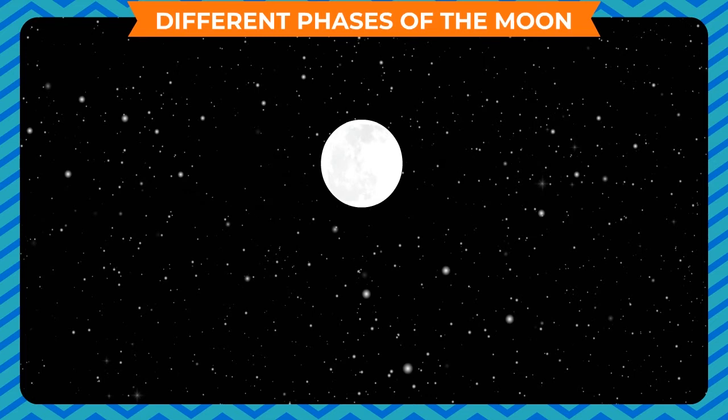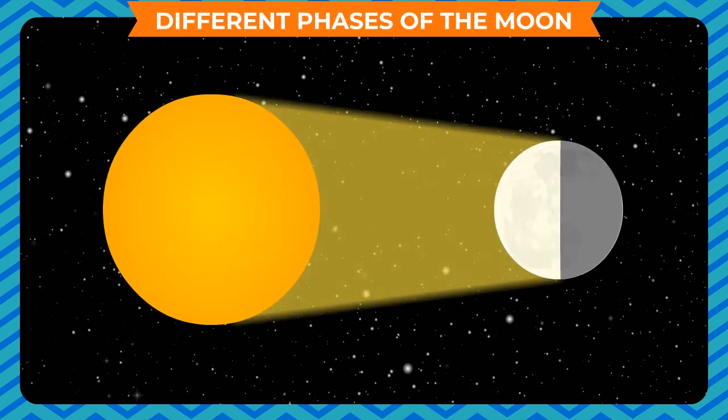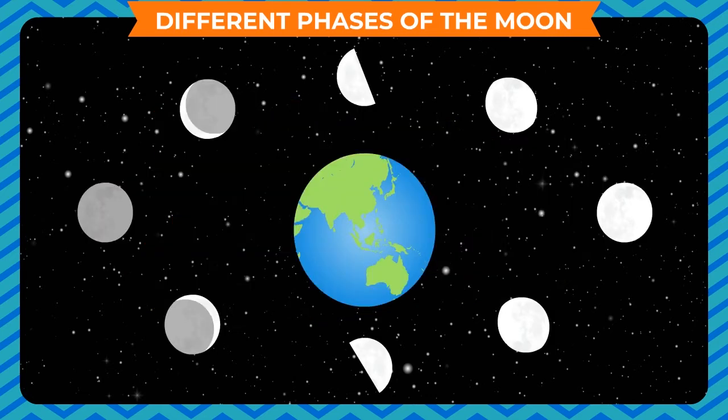It appears from the earth that the moon changes its shape frequently, but the fact is that the moon does not change its shape. It has a fixed spherical shape. When sunlight falls on the moon, it reflects, and we can see only that part of the moon which reflects the sunlight; the remaining part looks dark. The revolution of the moon around the earth makes it appear as if it is changing its shape.